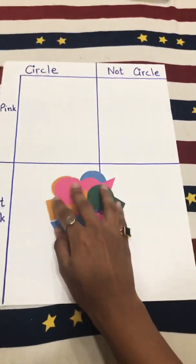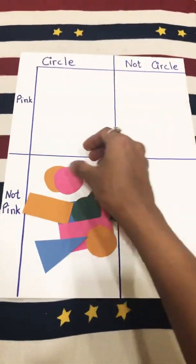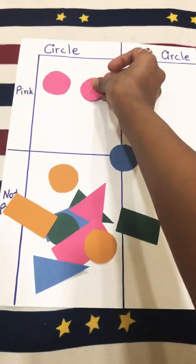Let us try and sort out our data. So I need to find pink circles. I can see one, and the other one is here, which I am going to place here.